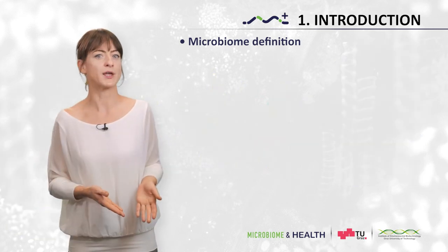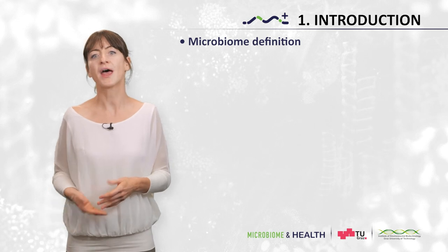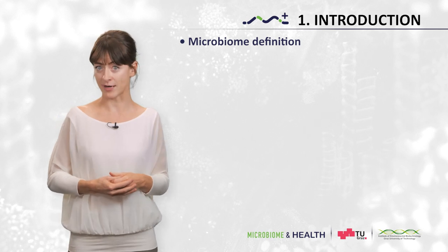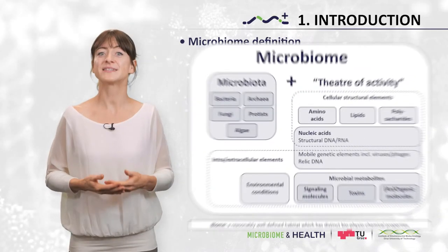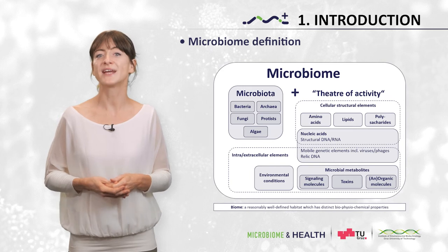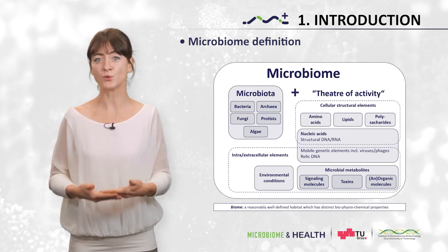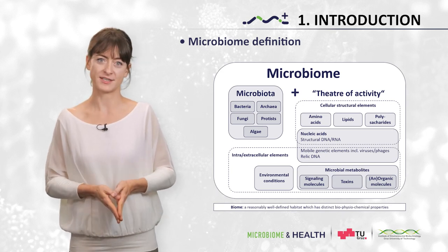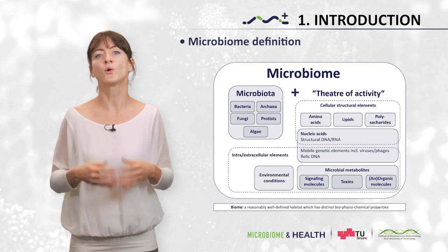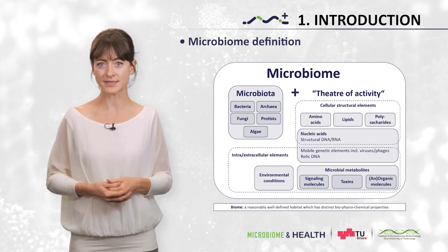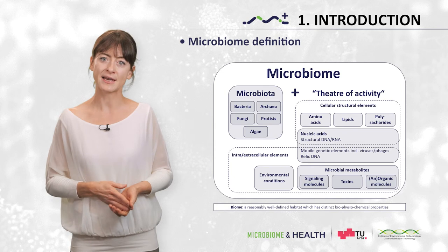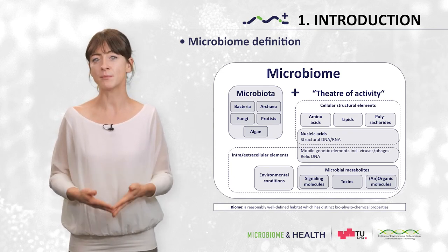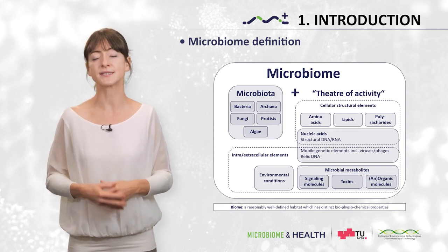Now that we have dealt with the term microbiota, what about the microbiome? Are phages, viruses, plasmids, prions, viroids and free DNA part of the microbiome? The term microbiome, as originally postulated in 1988, includes not only the community of microorganisms — the microbiota — but also their theater of activity. The latter involves the whole spectrum of molecules produced by the microorganisms, including their structural elements like nucleic acids, proteins, lipids, polysaccharides, metabolites, and also molecules produced by the coexisting hosts.